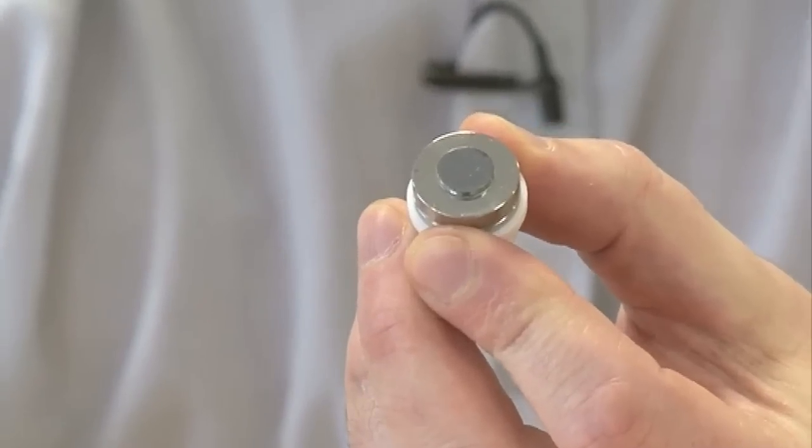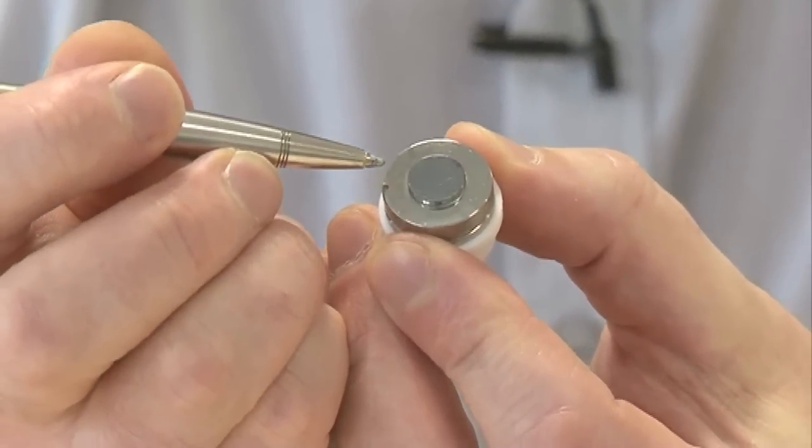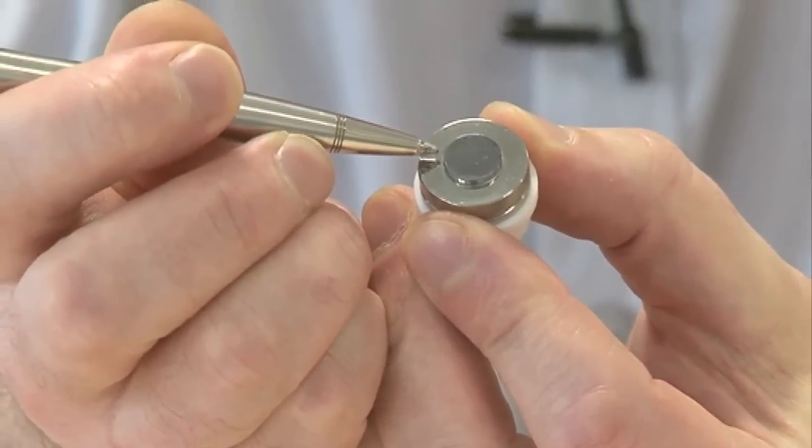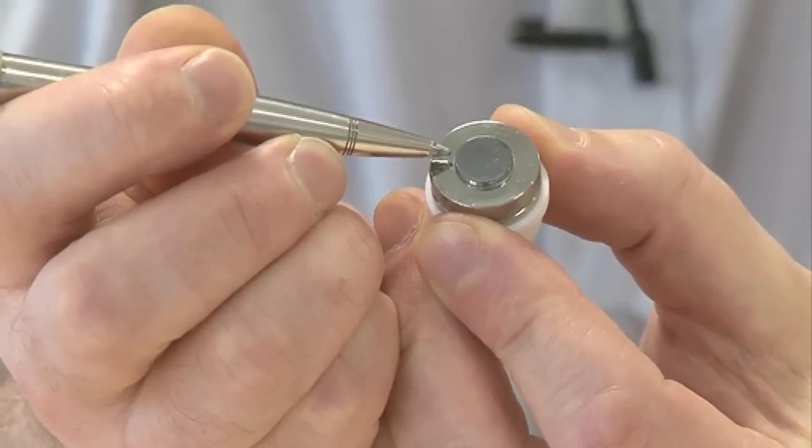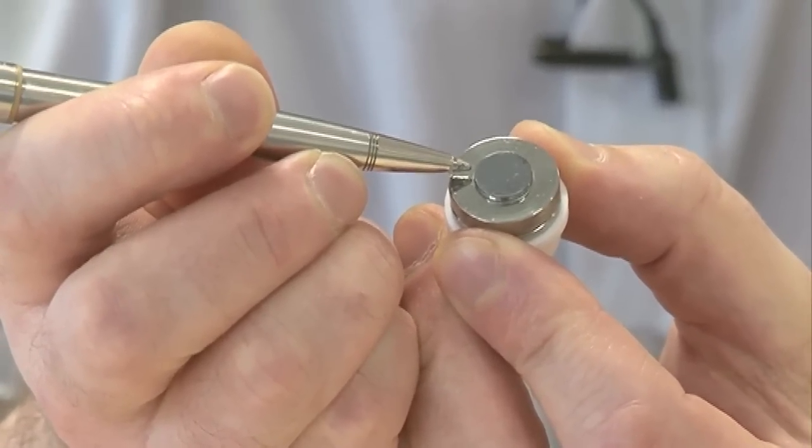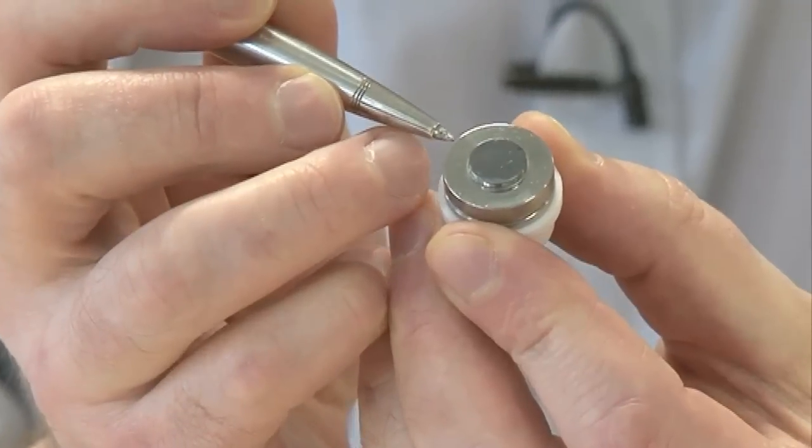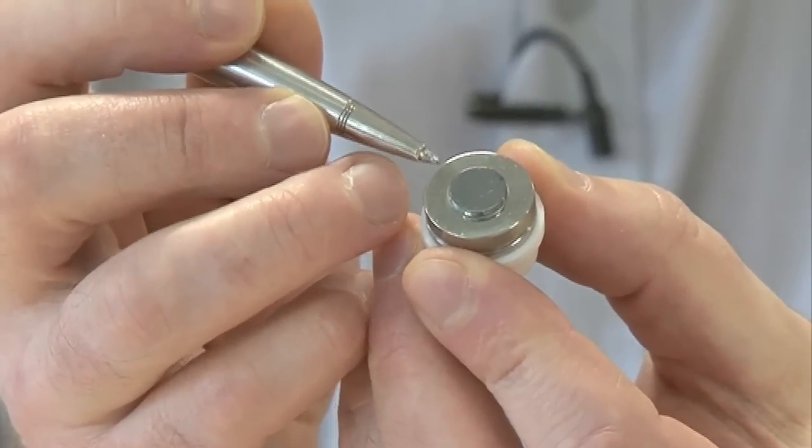This is a device known as a photocathode. What you're actually looking at here is a very small piece of gallium arsenide wafer which has been soldered with indium onto this molybdenum substrate, or a puck as it's called.